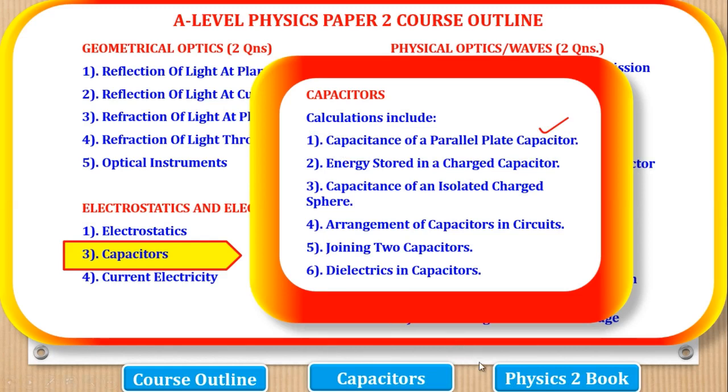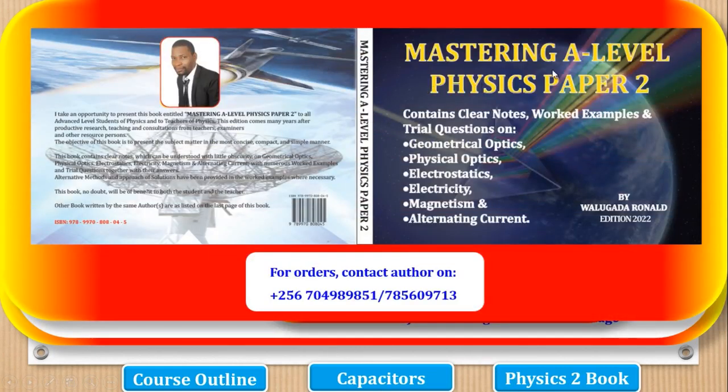So the notes in physics paper 2 can be found in this book, Mastering A-Level Physics Paper 2 by this author. And I'm the one. So if you need any copies, you can contact me on any of these two contacts. They are Airtel or MTN. But in this video, we're dealing with the worked examples. So the book has notes, worked examples, and trial questions. But in this video, we should mainly concentrate on this part of worked examples.